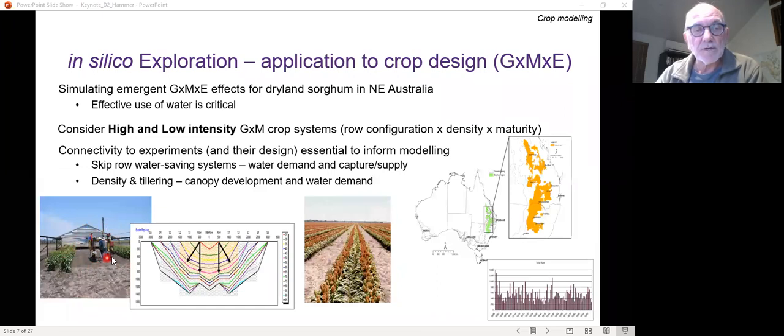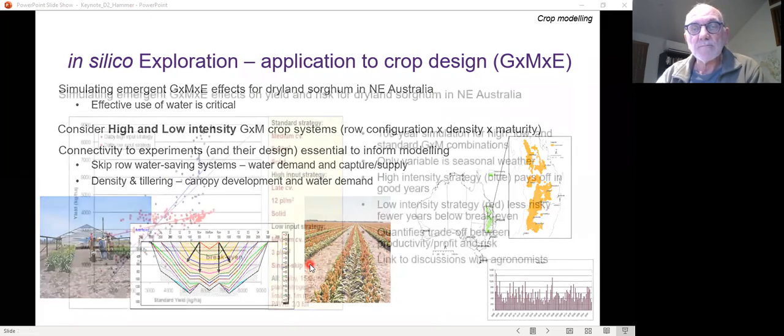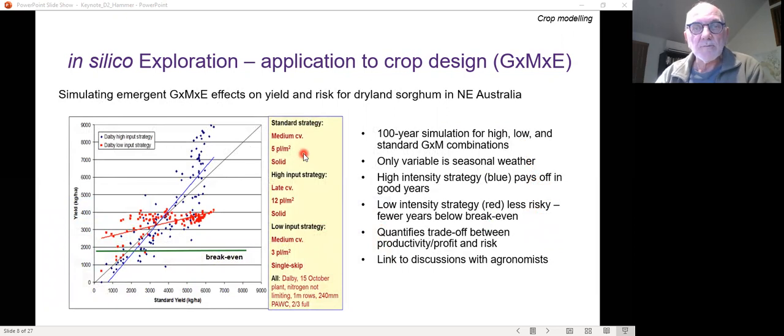And it's a water saving sort of system that just gives you a reduced canopy development, obviously a reduced potential yield. But to be able to model these systems, you really need to be able to understand and quantify the dynamics of water extraction across these gaps. And so there are specific experiments undertaken to do that, where we measured water extraction under rain out shelters with sorghum spread at quite a distance between these rows. And this graphic here, you could then determine each of these lines is a measure of water content of the soil by depth. So you can see the gradual spreading out of the capture of water by the root system from the two rows. And so we can put algorithms together that capture the dynamic of how a skip row crop accesses water in the soil. And similarly with density and tillering, we can change the canopy development, which changes the water demand.